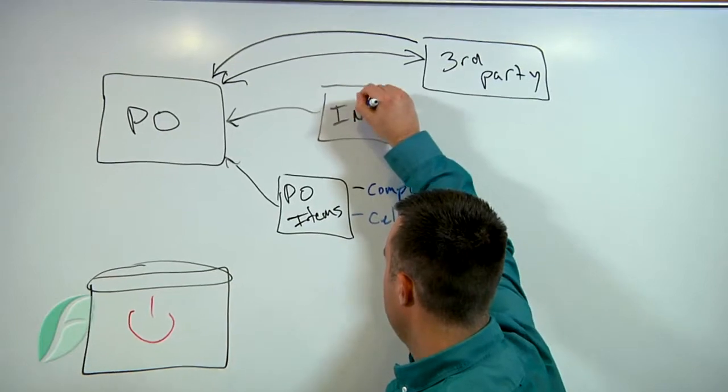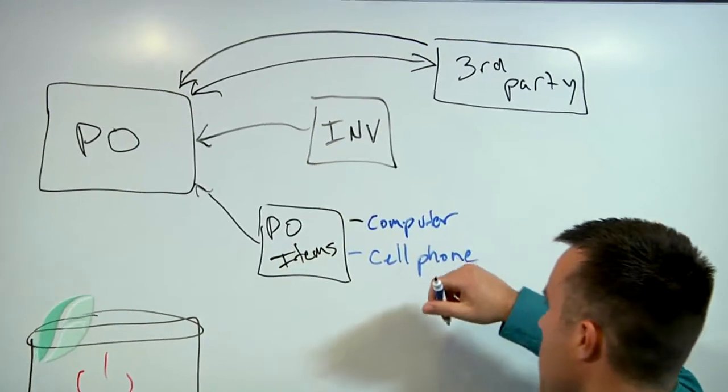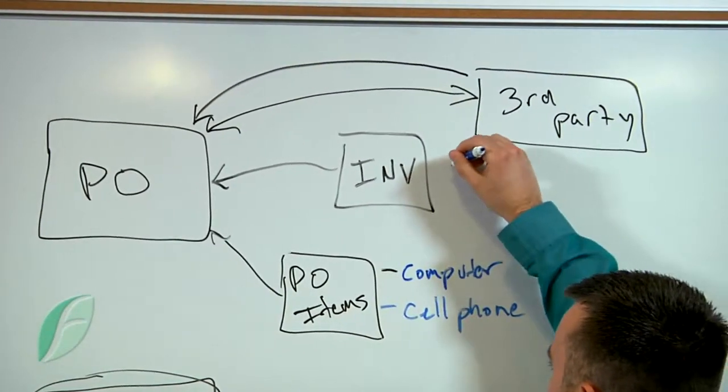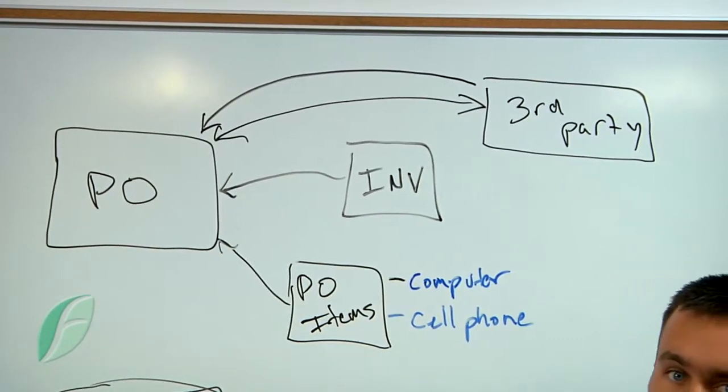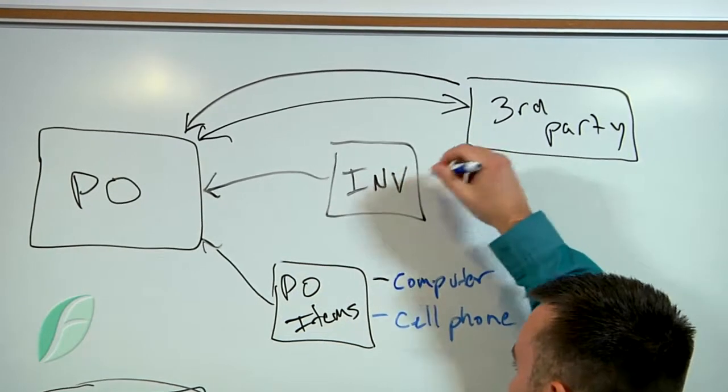So what our invoice table does is it actually tracks the invoices that are coming back in. Our items, once they're being shipped, once we've received them, that's what we're tracking in our invoice.